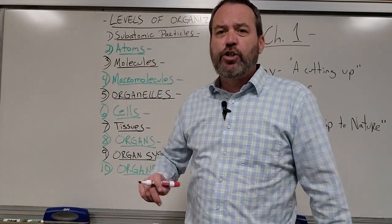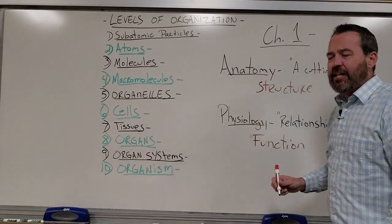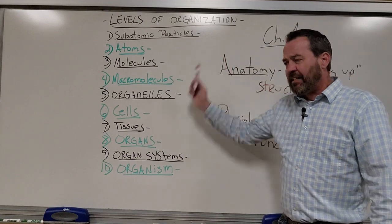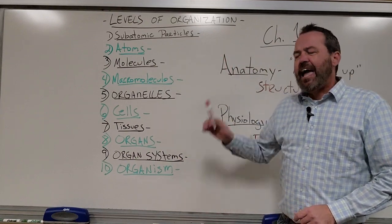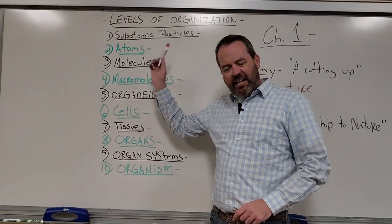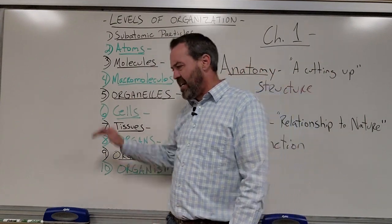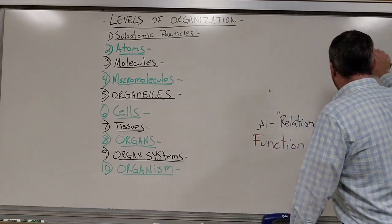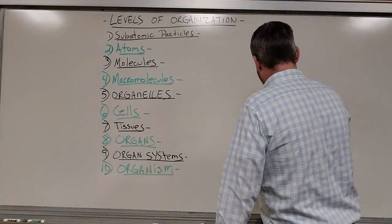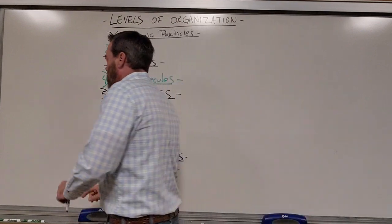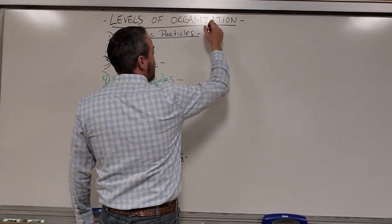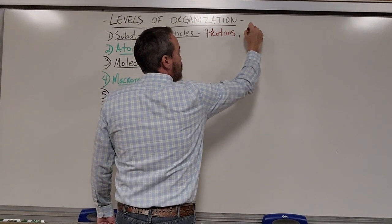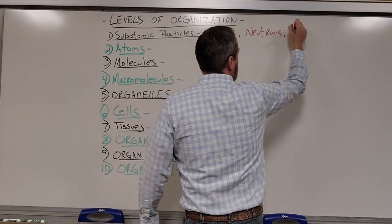Those are the basic first two definitions we absolutely have to be familiar with. Next, we're moving into the levels of organization. I've got my 10 levels of organization, and you have to be able to list these 1 through 10 in order, because we're going to use these to build the more complicated structures. So with subatomic particles, I'm looking for you to understand that these are my protons, my neutrons, and the electrons.